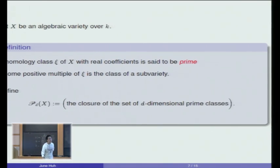I'll start with an algebraic variety defined over field k. I'll say that a homology class, in whatever your favorite homology theory, with real coefficients, is prime if some positive multiple of that homology class is a class of a reduced and irreducible subvariety. I'm going to collect them all in a set, which is defined to be the closure of the set of d-dimensional prime classes. This set is not a convex cone. If you pick two elements from this set and add them, there is no reason for the sum to be in this set. It is some set in a finite dimensional real vector space. It's a closed set by definition, but it's hard to imagine what it looks like.